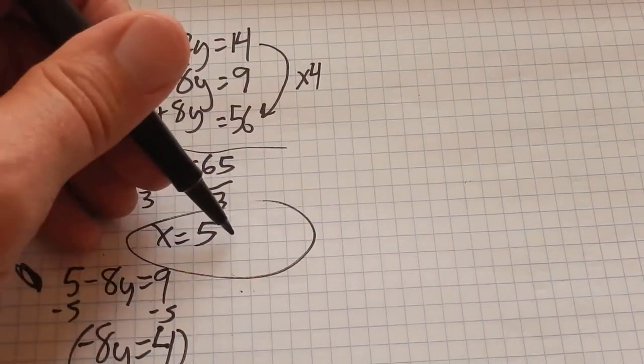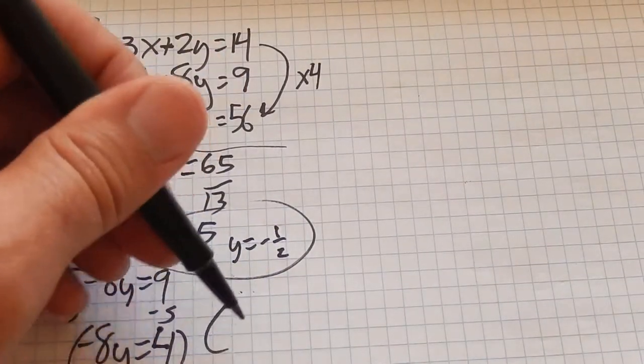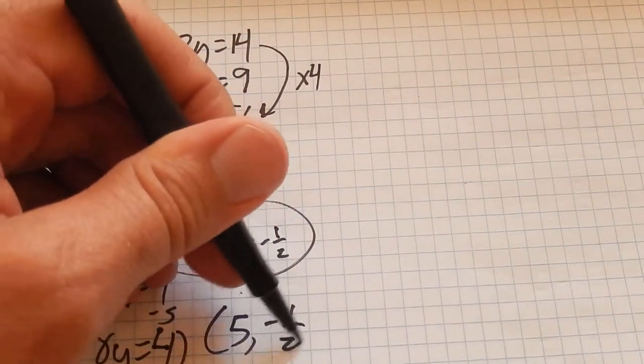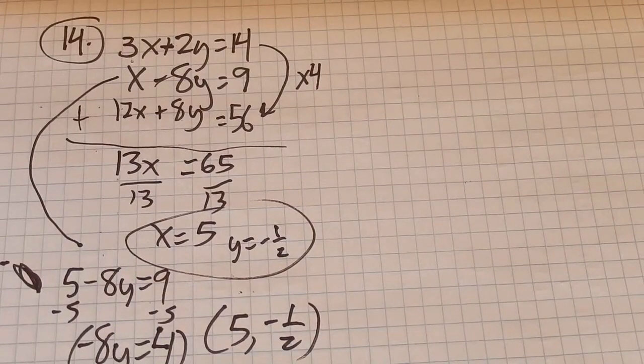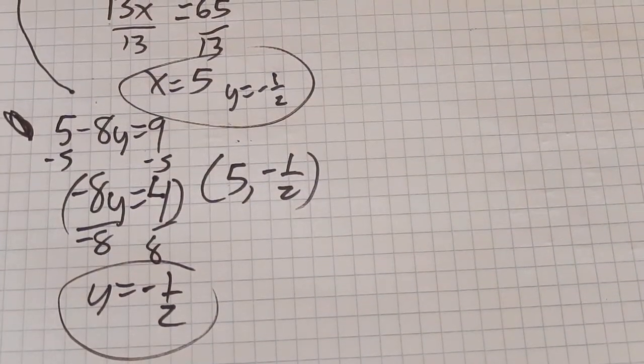So, I could write my answer this way, or I could write as the ordered pair 5, negative 1 half. Sorry, you didn't see that.